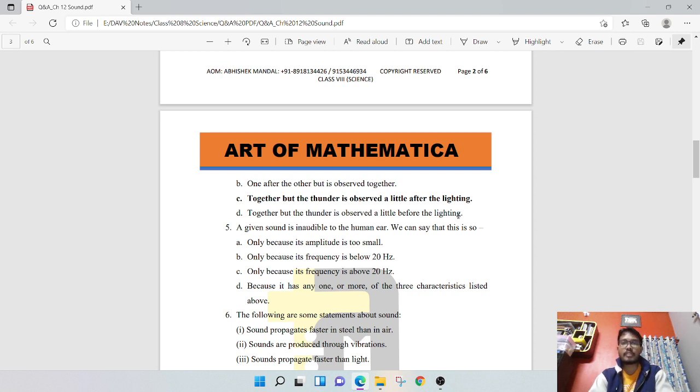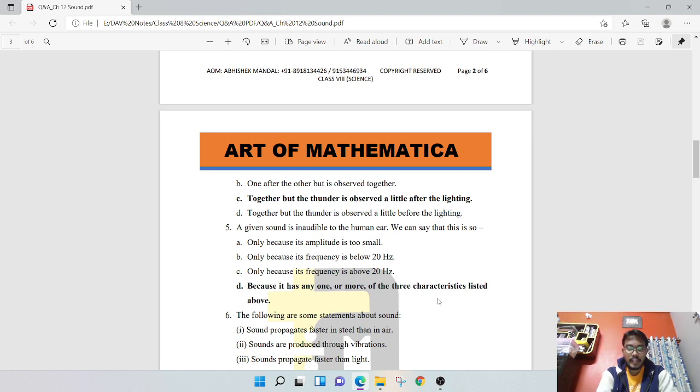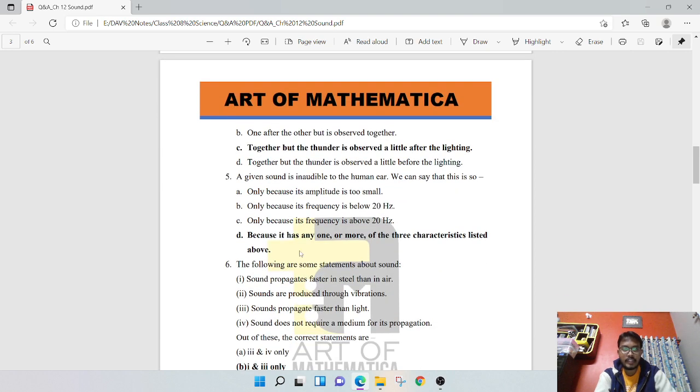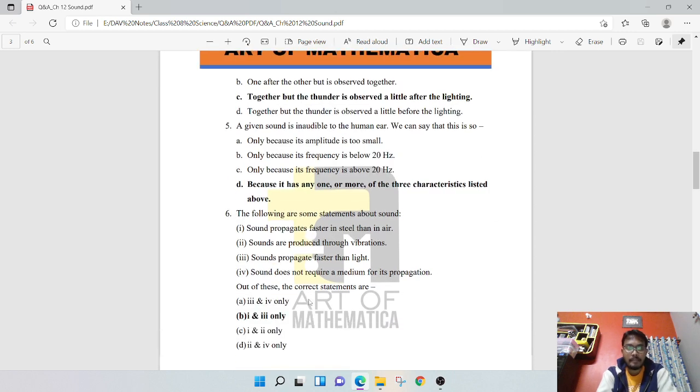Next question: a given sound is inaudible to a human ear. We can say this is only because its amplitude is too small, only because its frequency is below 20 hertz, only because its frequency is above 20 kilohertz. The fourth option is the answer: it has any one or more of the three characteristics listed above. Any one of these three can make sound inaudible.